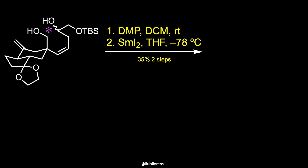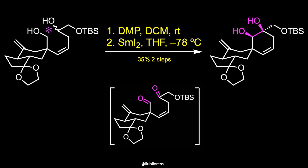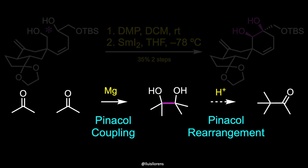The double oxidation of the alcohols was accomplished with the Dess–Martin periodinane, and the 1,6-dicarbonyl product was then subjected to pinacol coupling upon treatment with samarium iodide in THF. The pinacol coupling is a carbon–carbon bond-forming reaction between the carbonyl groups of an aldehyde or a ketone in the presence of an electron donor in a free radical process to deliver a vicinal diol. Under acidic conditions, highly substituted 1,2-diols tend to undergo pinacol rearrangement, which involves dehydration and a 1,2-alkyl shift to produce the corresponding carbonyl derivative.